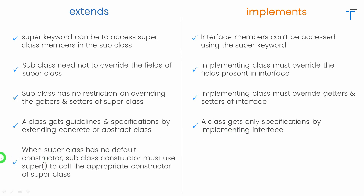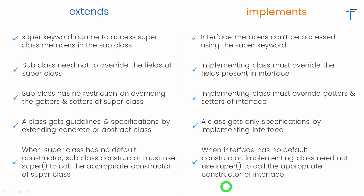Whenever a super class has no default constructor, it's compulsory for a subclass to use super to call the appropriate constructor of the super class, otherwise there will be an error. But in the case of interface, when there is no default constructor or no constructor present inside the interface, the implementing class need not use super to call any constructors from the interface. In fact, if you try to use super to call the constructors of an interface through the implementing class constructor, you will get an error.